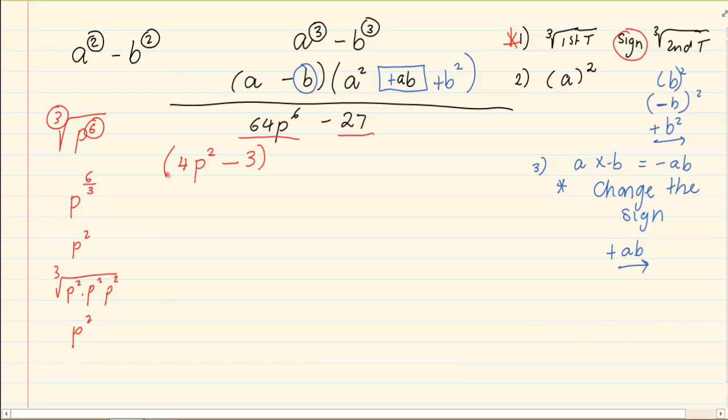Now how do we get the second bracket? We are going to square the first value which will give us 16p to the power of 4. Again, remember your exponent laws. If I square it, if I square a number, so in other words if I got 4p squared and I square a number, it's 4 squared which is 16 and p 2 times 2 which will give me 4. Then the last term is squaring the second term in the first bracket which will give me positive 9. So, this 4p squared creates the 16p to the power of 4. This minus 3 creates the 9 in the second bracket.